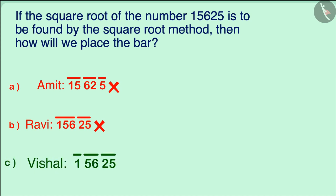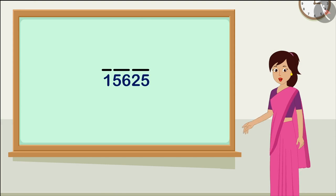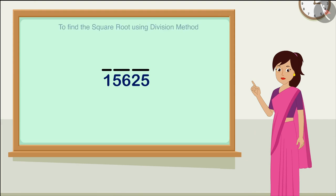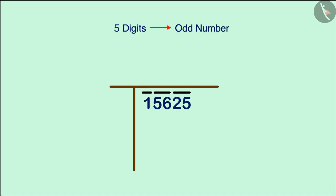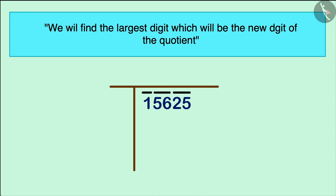Now all the students, after doing the first step correctly, start to find the square root of the given number by the division method. This number has five digits and is paired three times, so it will have three digits in its square root.